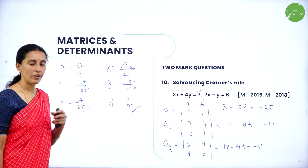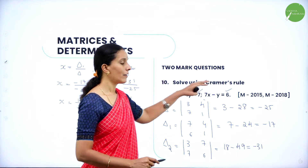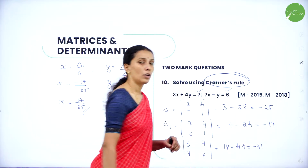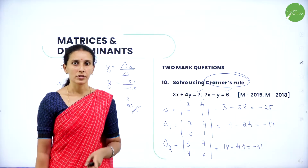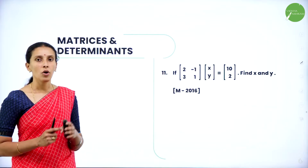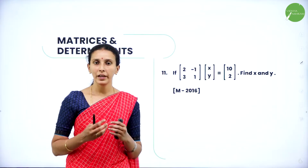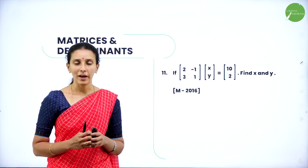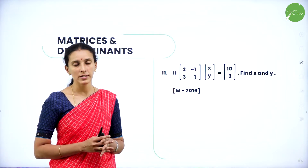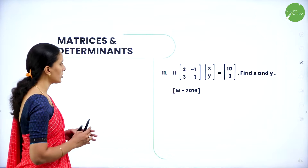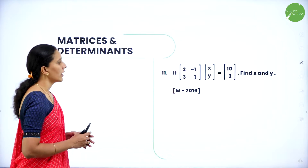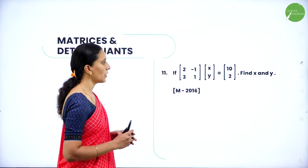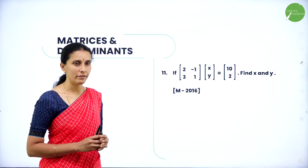The values of x and y obtained by Cramer's rule: x = 17/25 and y = 31/25. This is a very important question to expect. Along with Cramer's rule, you may also get two marks from multiplication of matrices or product of matrices. If [2, -1; 3, 1] multiplied by [x; y] equals [10; 2], find x and y.